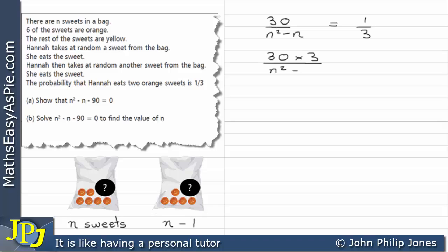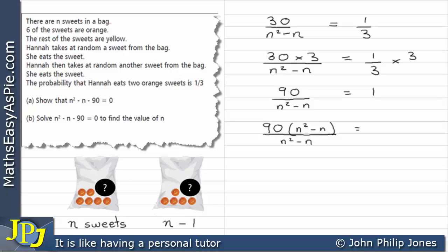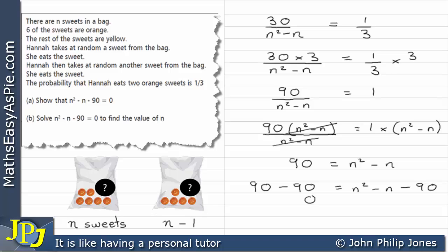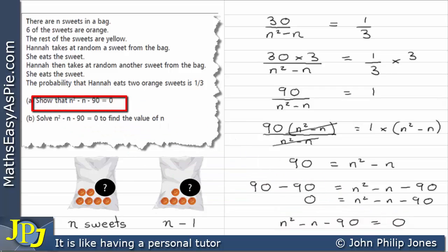Multiplying both sides by three: 90 over N squared minus N equals 1. Then multiplying both sides by N squared minus N, those cancel on the right, leaving 90 equals N squared minus N. Taking 90 from both sides gives N squared minus N minus 90 equals zero. And if you look at this, that's exactly what we were asked to prove in the question.